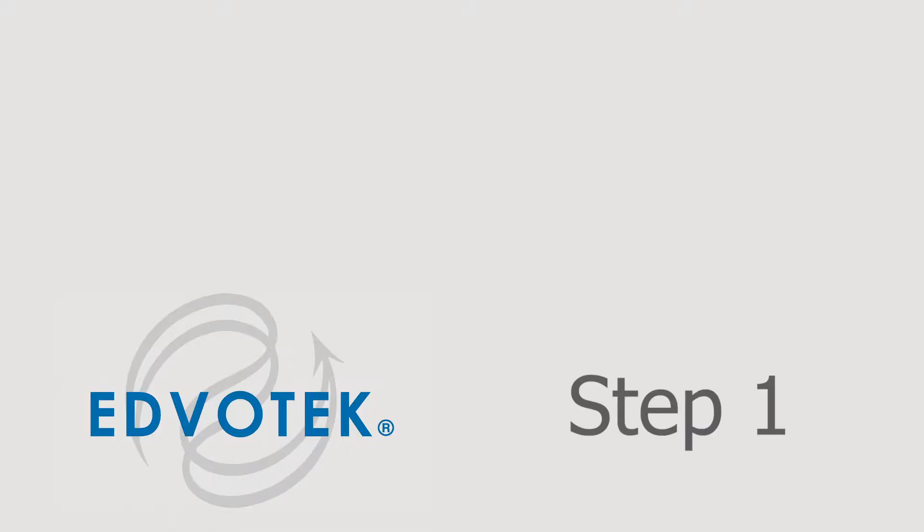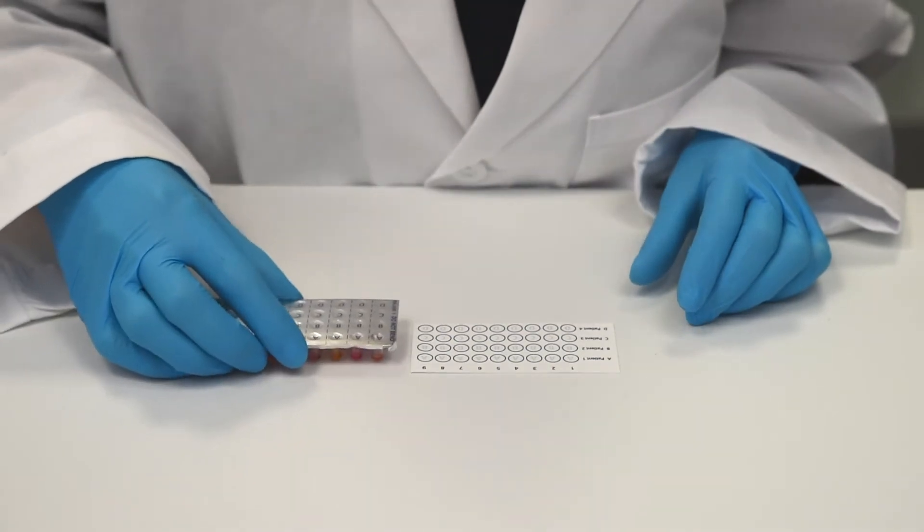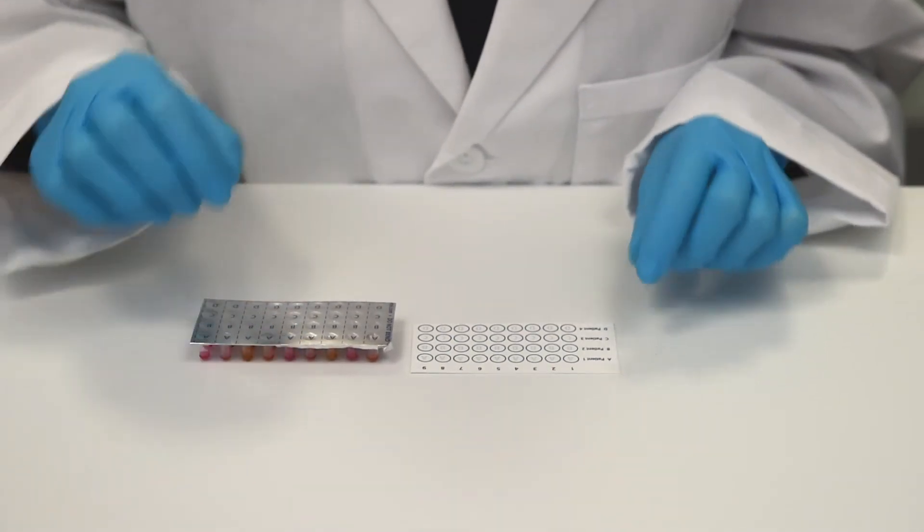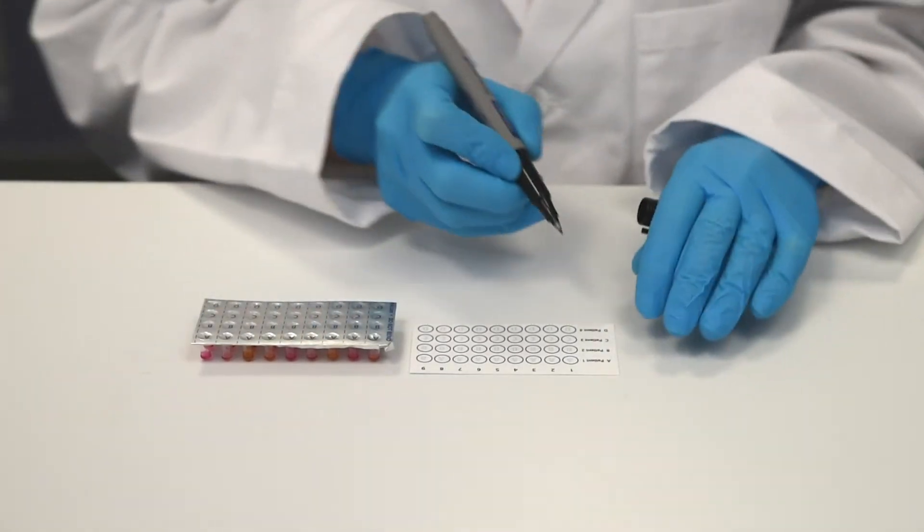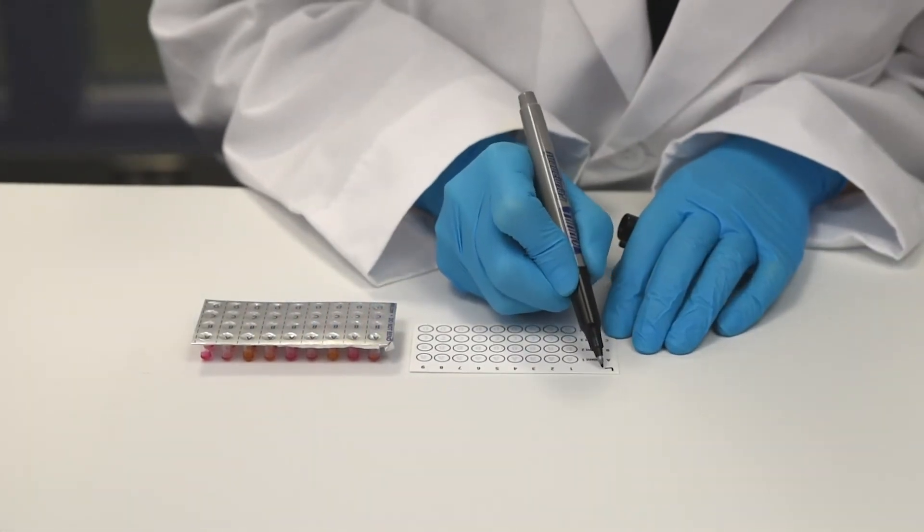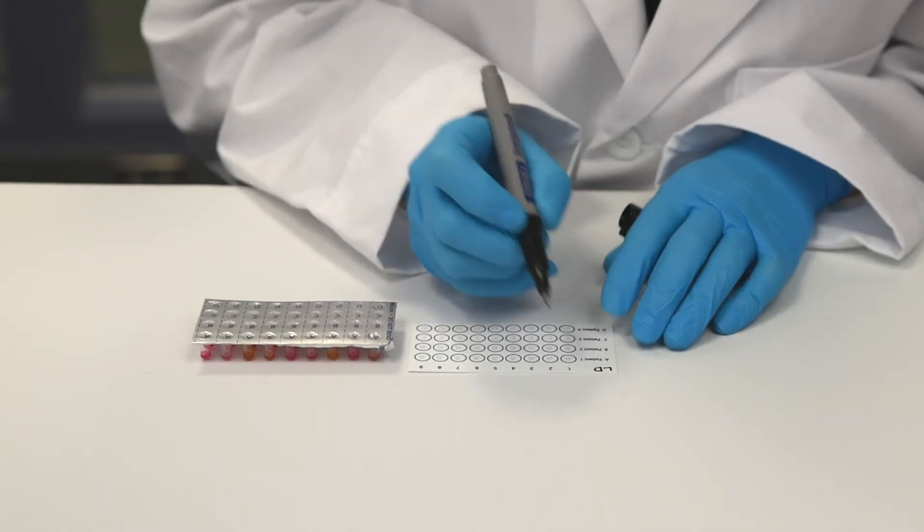Step 1. Orient the paper microarray card and quick strip plate so that patient 1 row A or row E is at the top left corner of each. Label the microarray card with your initials or group number.